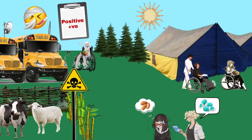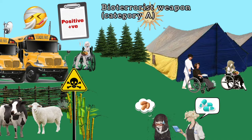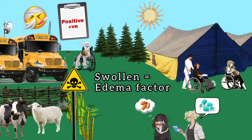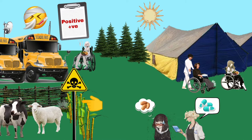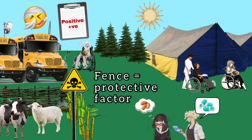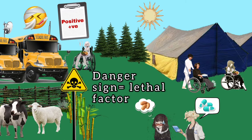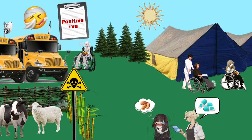The disease has created havoc in the population and people are being brought by bus, so remember that it is a bioterrorism weapon. The anthrax toxin is made up of three constituents. Firstly, the patients have swollen legs — this reminds you of edema factor. Secondly, animals like cows and sheep are kept inside a fence — the fence reminds you of protective factor. Thirdly, there is a danger sign beside the animals — this reminds you of lethal factor. These three constituents act synergistically to increase cAMP levels, symbolized by the health camps.